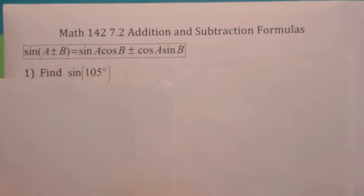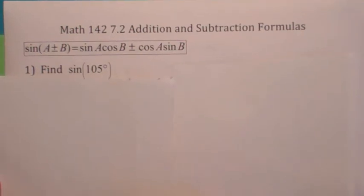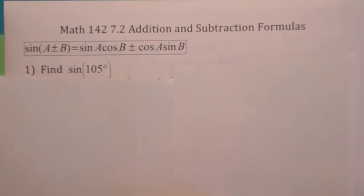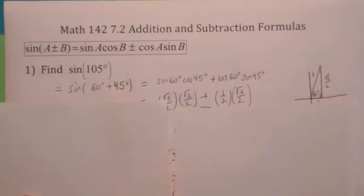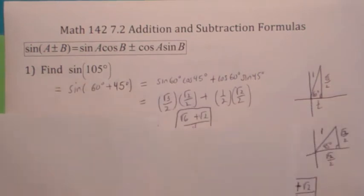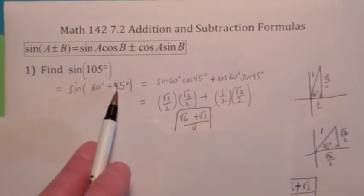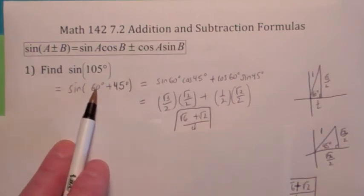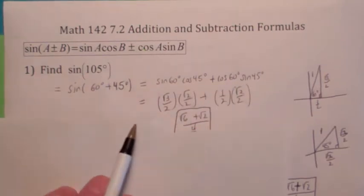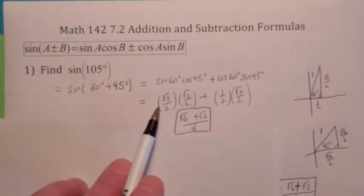Here's an example of how you might need it. You might want to find the sine of 105 degrees. That's not one of our known angles, but it turns out it's the sum or difference of two of our known angles. There aren't that many to try — basically 30 degrees, 45 degrees, and 60 degrees. It turns out 60 plus 45 is 105. So then you would say it's the sine of the first, cosine of the second, plus the cosine of the first, sine of the second. From here on, you should be able to compute these rather easily.